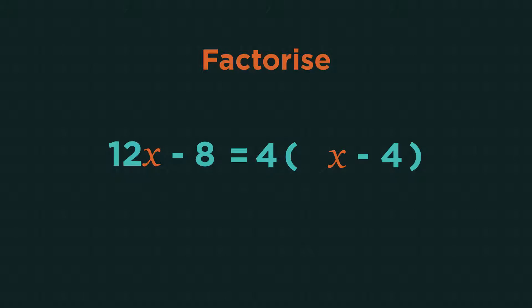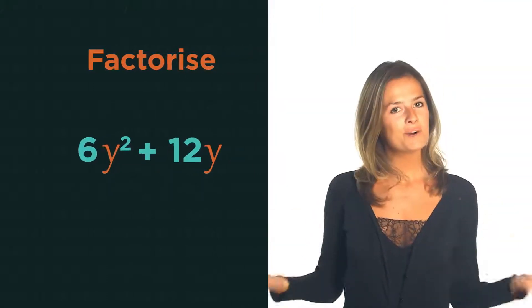Then what do we need to multiply 4 by to get 12x? 3x, so 3x inside the bracket. And what do we need to multiply 4 by to get negative 8? Negative 2, so that also goes inside the bracket. This is the factorized expression.